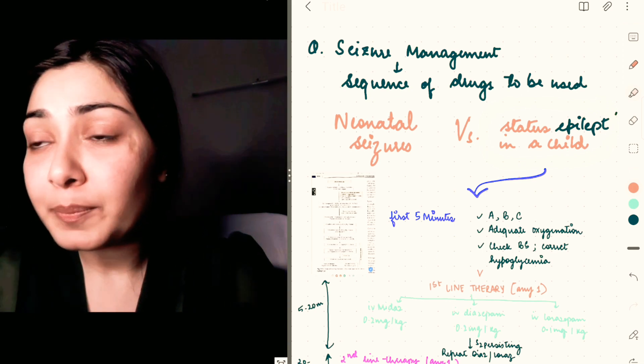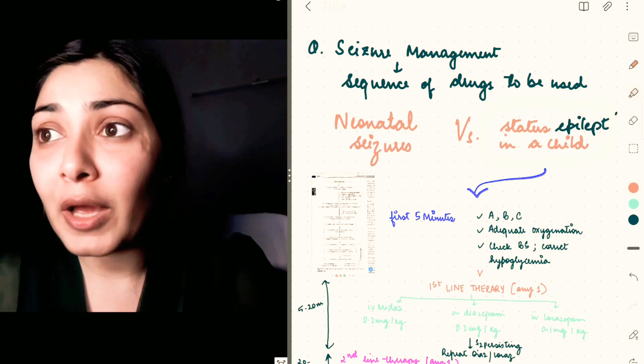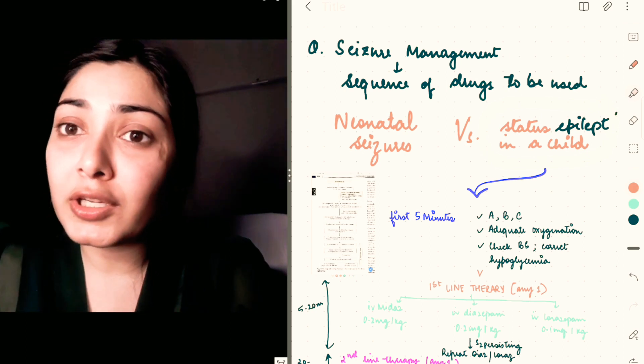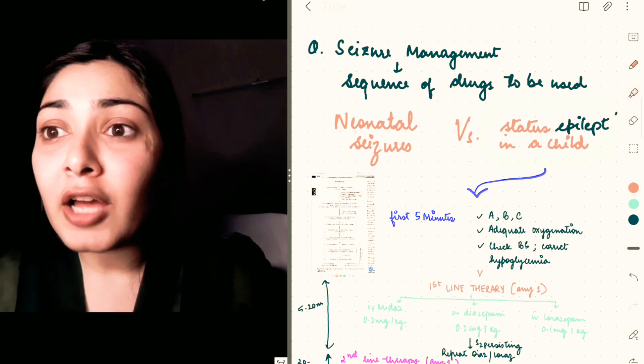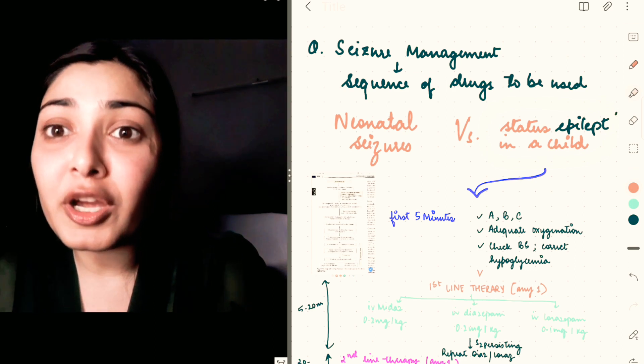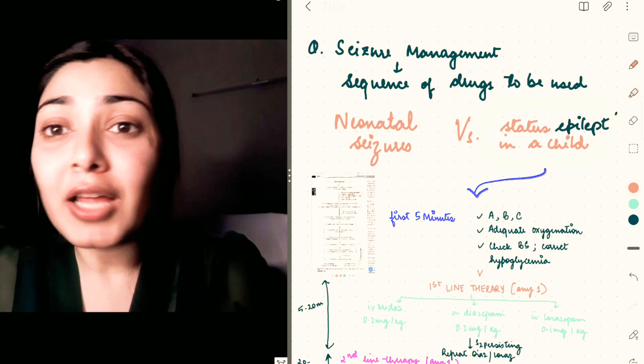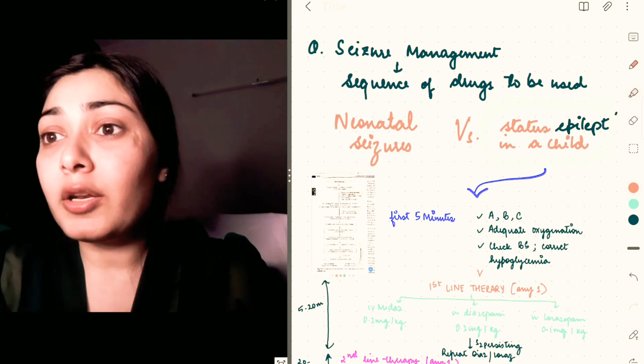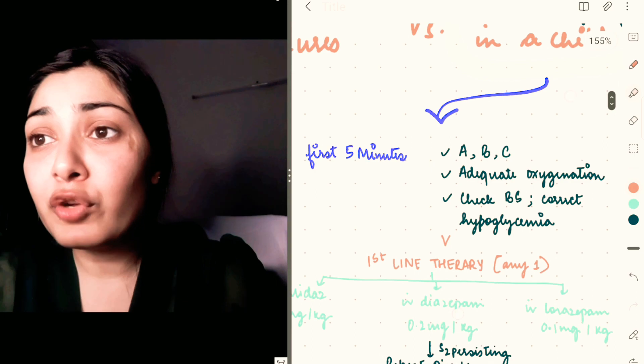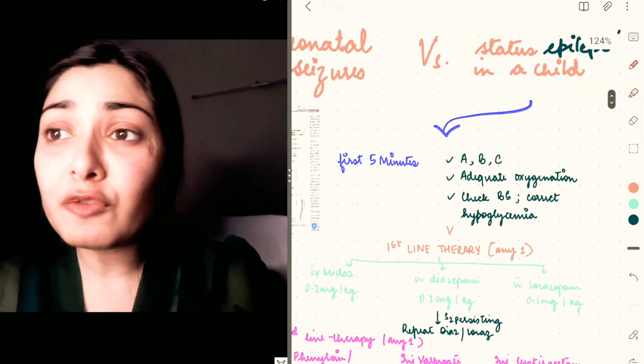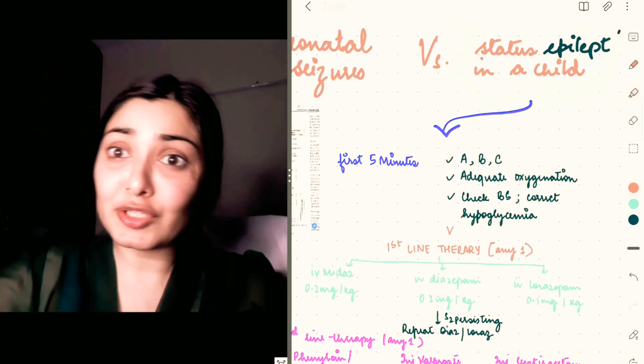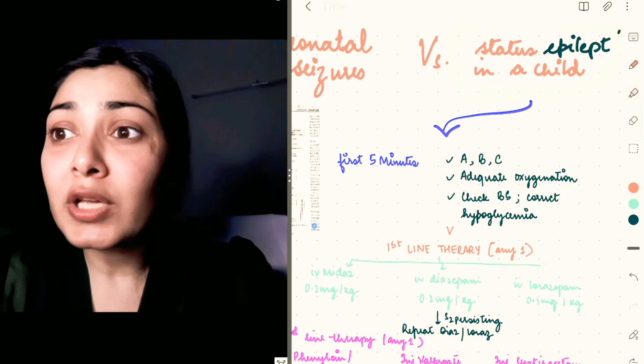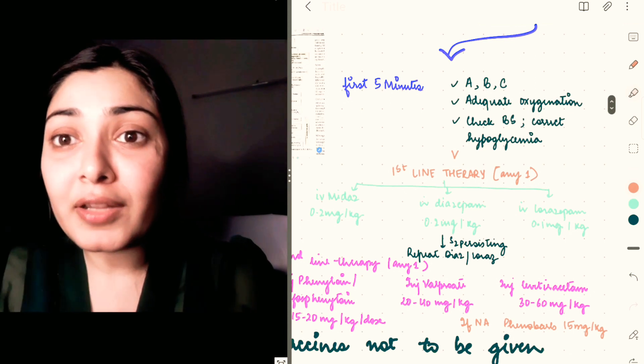Now coming to the management of status epilepticus in a child, I'll give a short overview of how we clinically manage a child in status. I'll show a clip from OP Ghai textbook of pediatrics because that's what most of you must be studying during your MBBS period. First of all, whenever you receive a child in status epilepticus, in the first five minutes you stabilize the child—maintain airway, breathing, circulation, provide adequate oxygenation. You check the blood sugar, and if it's low you correct the hypoglycemia by pushing 2 ml/kg of D10, that is 10% dextrose.